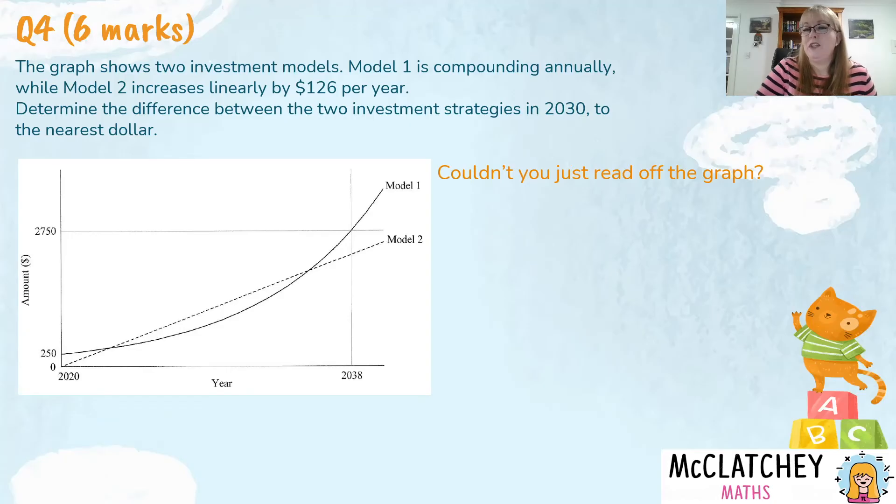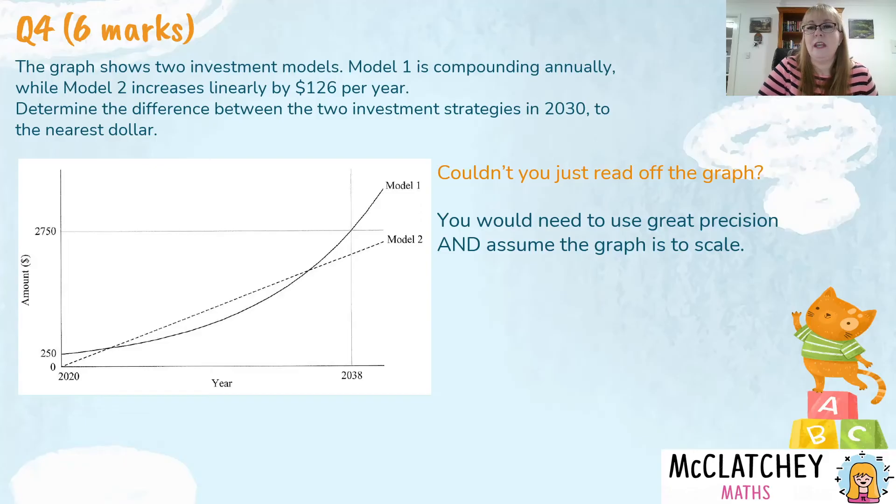Okay. Now, this is a question I'm sure a lot of you are asking. Couldn't you just read it off the graph? Yes, you could, but you'd need to be doing that with great precision and assuming the graph is to scale. That's a big assumption. It doesn't tell us if it's to scale or not. So you're making that assumption.